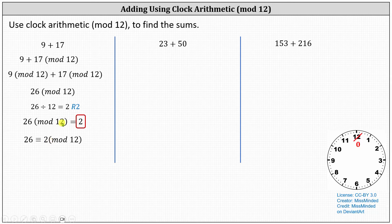To verify 26 mod 12 equals 2 using the clock on the right, we first replace the 12 with a 0. Then we think of the hour hand pointing at 0 and count ahead 26 hours. If we count ahead 12 hours, we're back at 0. Another rotation would be at 24 hours, still back at 0. And then 25, 26 — the hour hand points at 2, indicating 26 mod 12 equals 2.